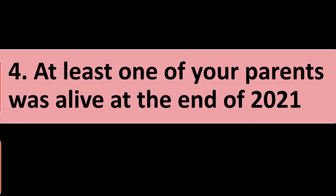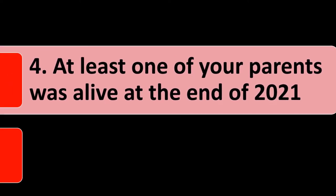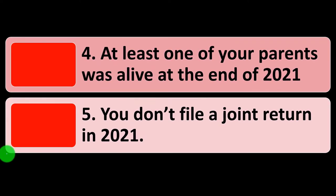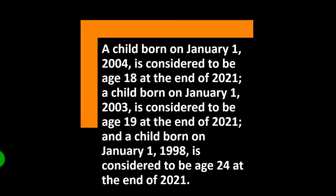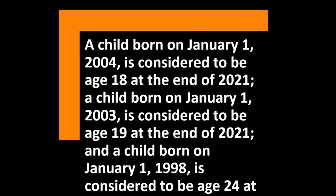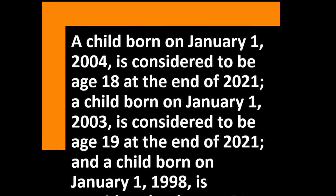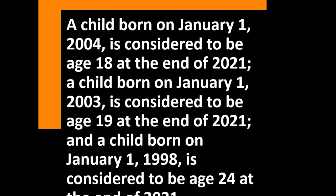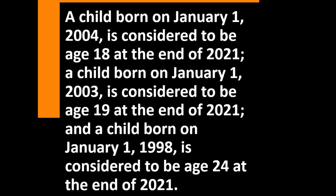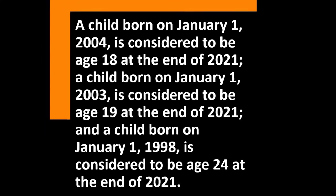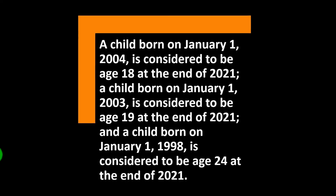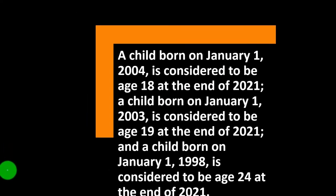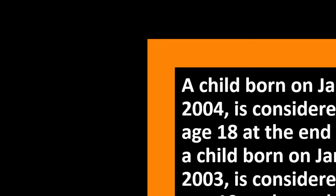Additional Form 8615 conditions: at least one of your parents was alive at the end of 2021, and you don't file a joint return in 2021. For reference: a child born January 1, 2004 is considered age 18 at the end of 2021; born January 1, 2003 is considered age 19; and born January 1, 1998 is considered age 24 at the end of 2021.